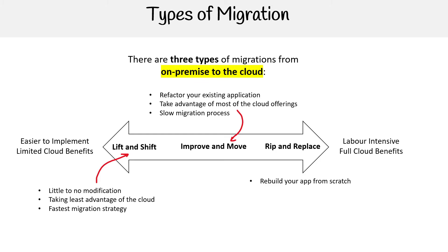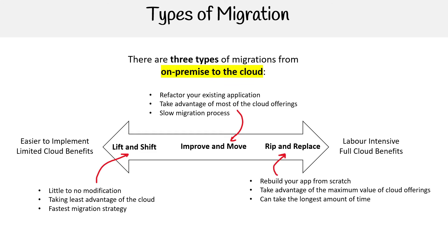Rip and replace — we're rebuilding from scratch, taking advantage of the maximum value of the cloud offerings, but it can take the longest amount of time. So those are the three. Let's reiterate them with a little bit more text here to reinforce what they are.